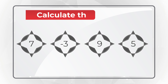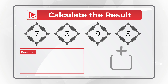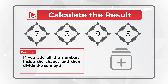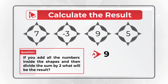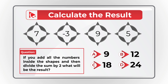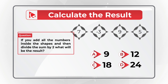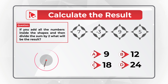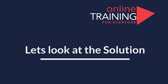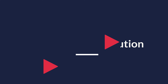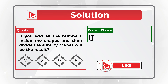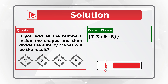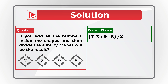Here's a question to test your business math skills. You're presented with a set of numbers in a compass-like figure. You need to add up all the numbers inside the shapes and divide the sum by 2. Choices are: A — 9, B — 12, C — 18, D — 24. The math is straightforward: 7 minus 3 plus 9 plus 5 equals 18, and 18 divided by 2 equals 9.